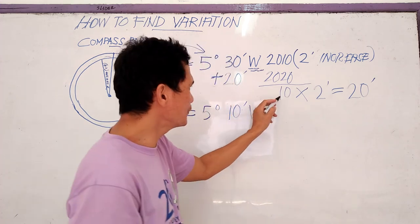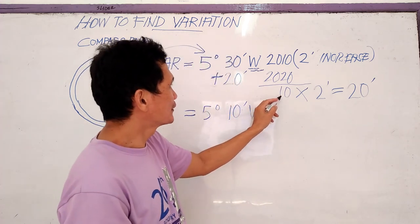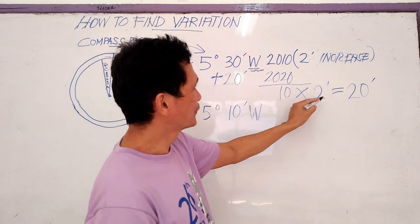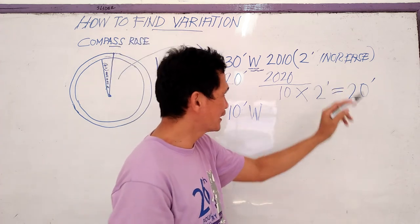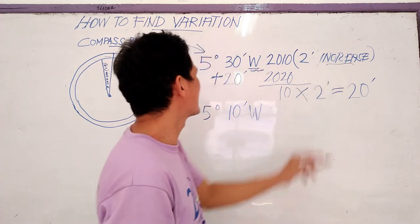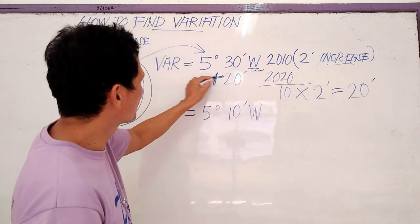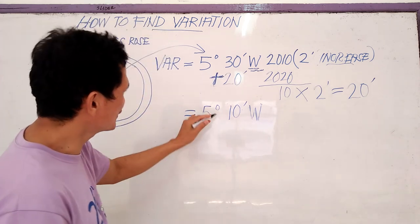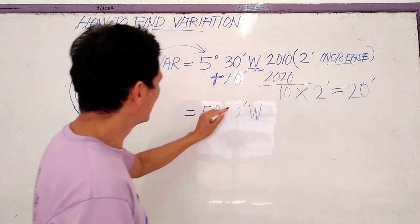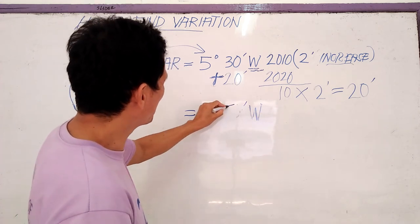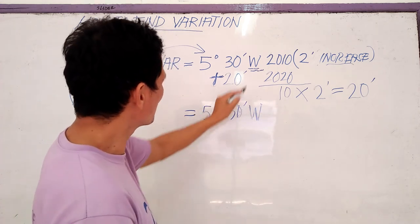So same procedure, ten years times two equals twenty. It says here increase, so we will plus. So this will become bigger. Same procedure, use this, whatever the sign.